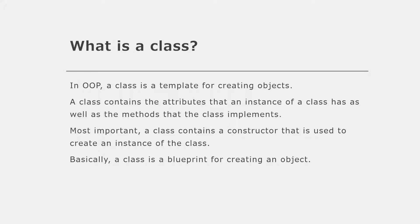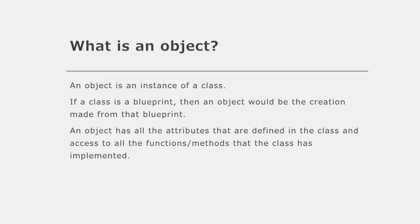An object in OOP is just an instance of a class. If a class is a blueprint, then the object is the thing you make with that blueprint. An object is going to have all the attributes defined in the class, and it's going to have access to all the functions and methods that the class has implemented.